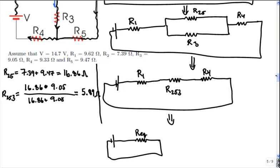Next step is to take all of these in series with each other and combine them. I'll label this as R12345. We're just going to do a series calculation, which is simple addition: 9.62 for R1, plus R253 in the middle, which is 5.89, plus R4, which is 9.33.